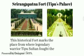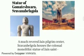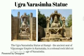Statue of Gomateshwara or Bahubali at Shravanabelagola: This statue stands in the Jain pilgrimage center. The global clothing ceremony was held at this colossal monolithic statue of the Jain saint Gomateshwara. The Ugra Narasimha Statue at Hampi, the ancient seat of the Vijayanagara Empire in Karnataka, is a cultural rock carved to form the image of Narasimha.